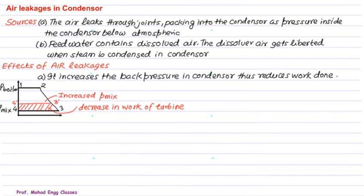If the back pressure increases from 4 to 4 prime, thereby you have reduced work 1, 2, 3, 4 prime, and therefore there is a decrease in the work of turbine by the quantity 4, 3, 3 prime, 4 prime. This is the ill effect of air leakage in the condenser.